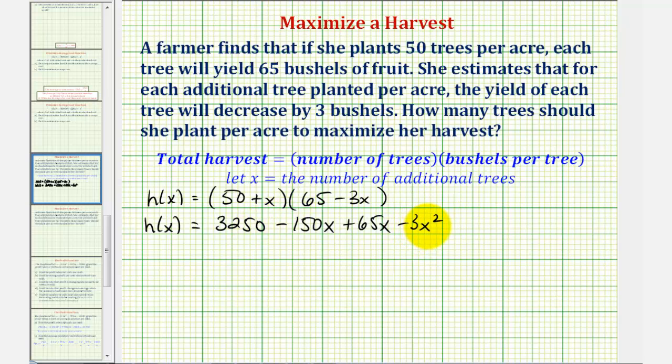Let's go ahead and combine like terms and write the terms in descending order. We'd have h(x) equals negative 3x squared. Combine the x terms would give us minus 85x, and then plus 3,250.